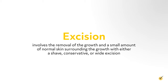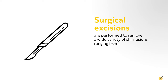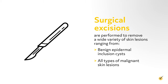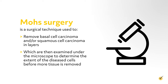Excision involves the removal of the growth and a small amount of normal surrounding skin, either via shave, conservative, or wide excision. Surgical excisions are performed to remove a wide variety of skin lesions, ranging from benign epidermal inclusion cysts to all types of malignant skin lesions. Mohs surgery is a surgical technique used to remove basal cell carcinoma and/or squamous cell carcinoma in layers, which are then examined under the microscope to determine the extent of the diseased cells before more tissue is removed.